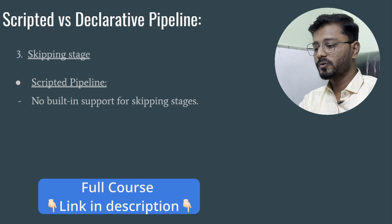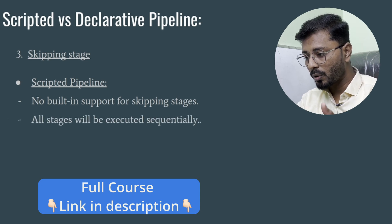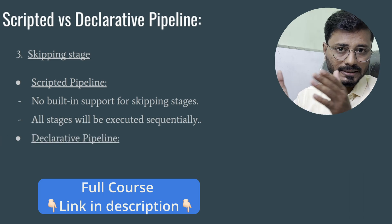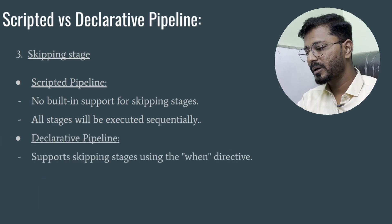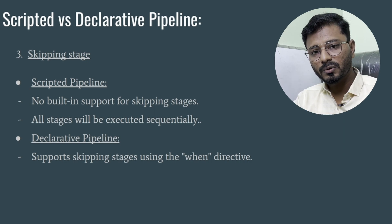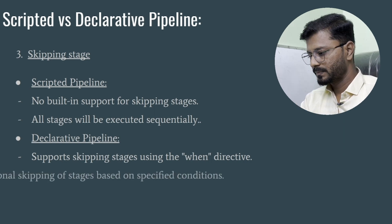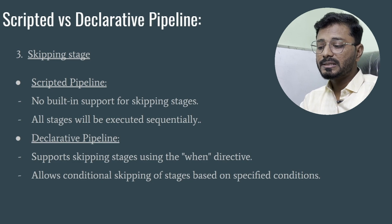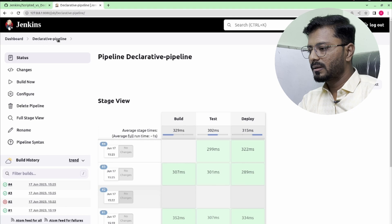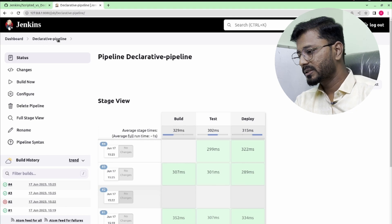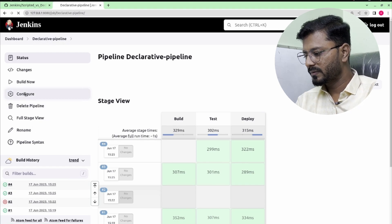The third difference is skipping stages. In a scripted pipeline there is no built-in support for skipping a stage — all stages execute sequentially. In a declarative pipeline, you can skip a particular stage using the 'when' directive, which allows conditional skipping of stages based on specific conditions.